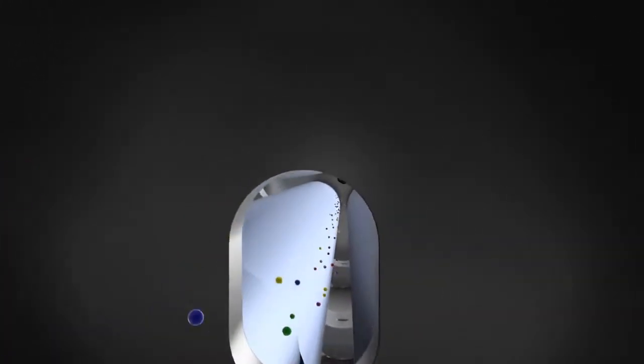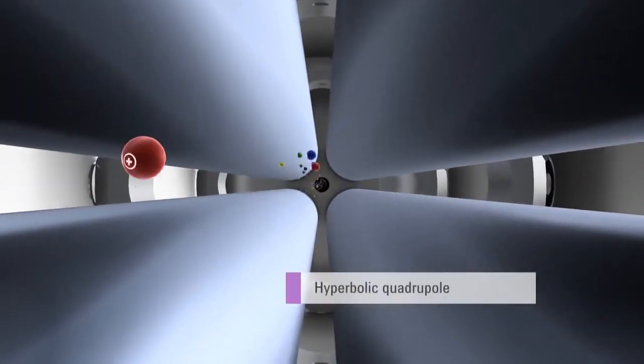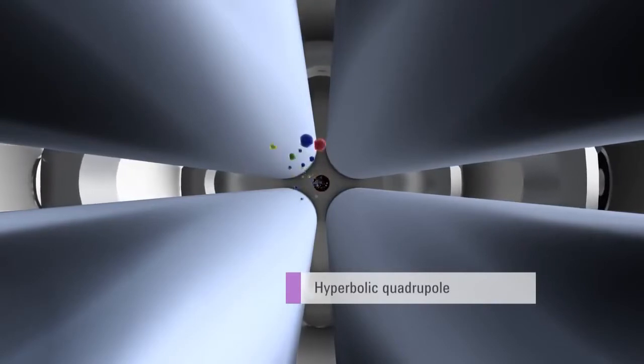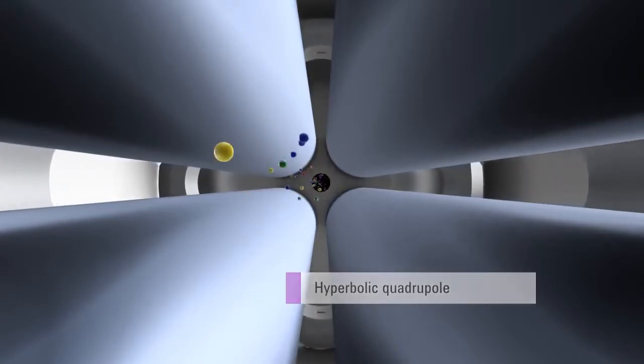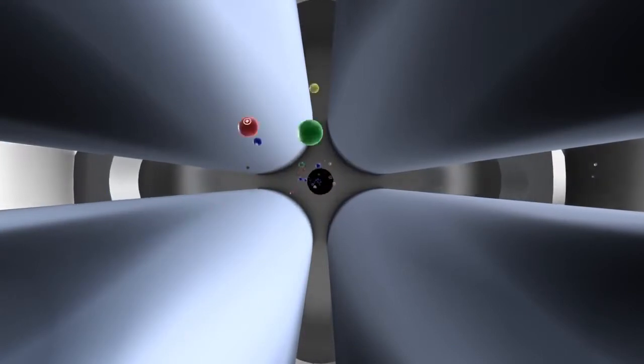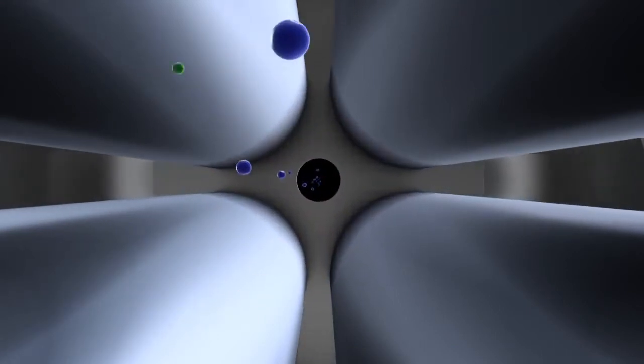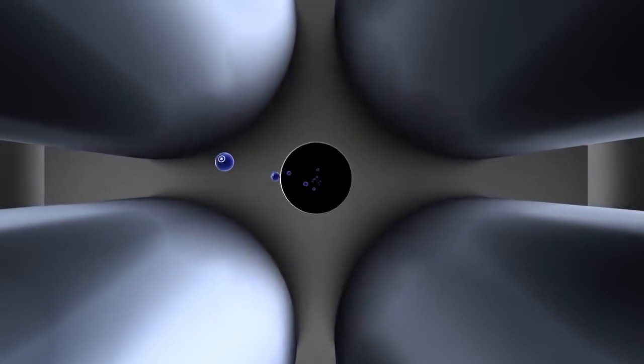From the collision reaction cell, the ions pass into the quadrupole mass analyzer, which separates ions based on their mass-to-charge ratio. The 7700 is unique in using a high-frequency 3 MHz hyperbolic quadrupole. These features combine to give improved peak separation and higher transmission, providing the 7700 with the best abundance sensitivity specification of any quadrupole ICP-MS.